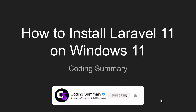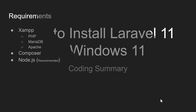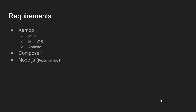Hello everyone, in this video I'm going to teach you how to install Laravel 11 on Windows 11. The software that you need to install: you need XAMPP, because we need to install PHP — XAMPP is an easy way to install PHP and a database on Windows. The next software you need is Composer, and then Node.js, though it's recommended and you don't have to install Node.js on your first installation — we are going to skip Node.js in this video.